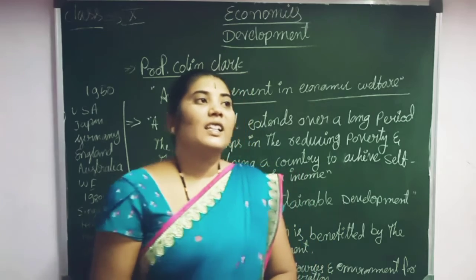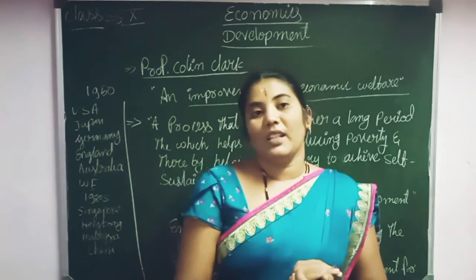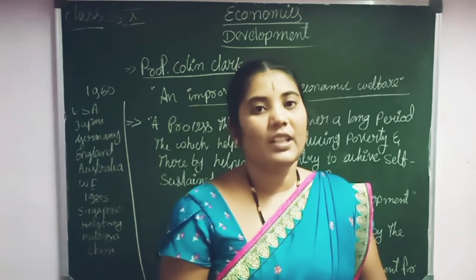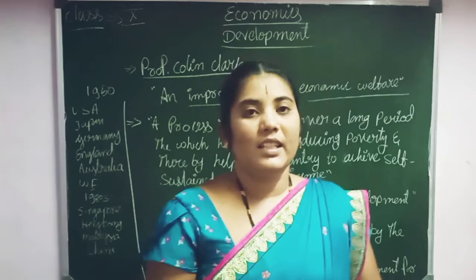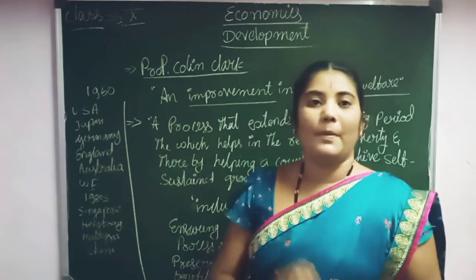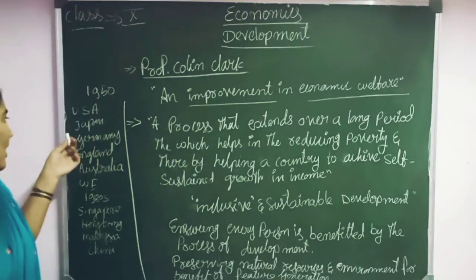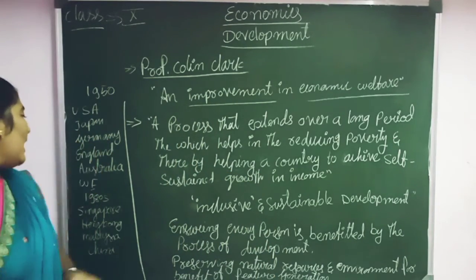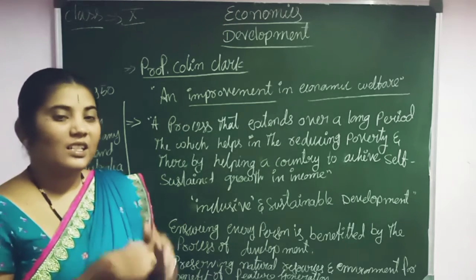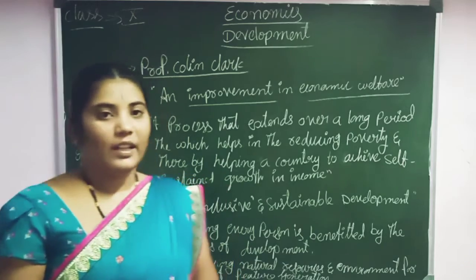In the period of the 1950s, many countries increased their national income continuously. Those countries are called developed countries. Countries such as Germany, Japan, England, Australia, and Western European countries are considered developed countries in the period of 1950 and even today.